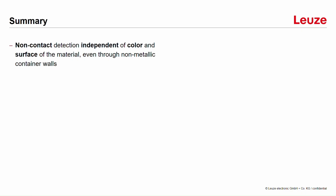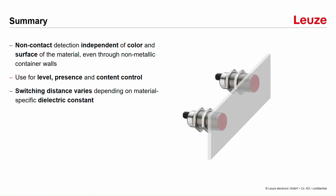Let's sum up the main facts for capacitive sensors. With this sensor technology it is possible to detect materials completely independently of their color and surface, even through container walls. These sensors are very useful for applications with level, presence, or content control. It is very important to consider that the switching distance varies depending on the material-specific dielectric constant. For dry materials, for example sugar, the dielectric constant is very low and therefore the switching distance will be low. For materials with a high share of water, the switching distance will be higher.